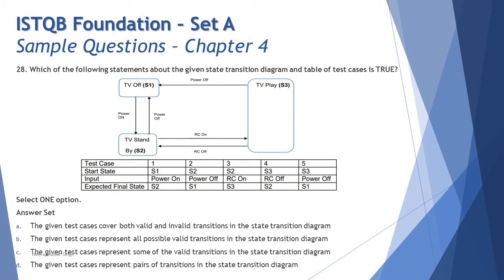The transitions are: off to standby, standby to off, standby to TV play (remote control on), and TV play back to standby (remote off). If a power cut happens, it goes from TV play directly to TV off. The table covers five transitions: S1 to S2, S2 to S1, S2 to S3, S3 to S2, and S3 to S1, exactly matching the diagram.